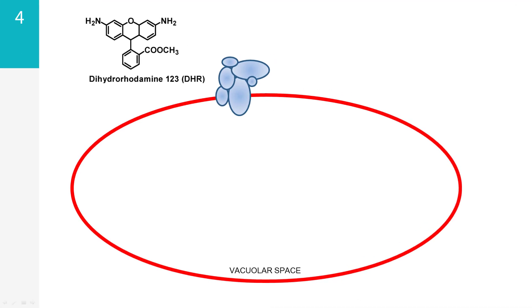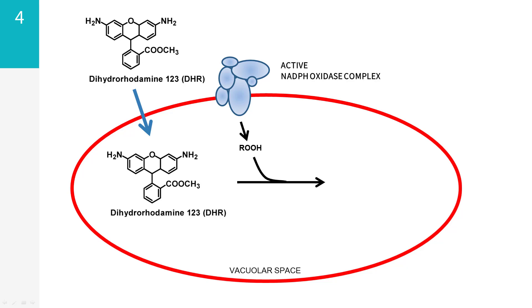Dihydrorhodamine is a chemical compound that can permeate most cellular compartments and membranes and spontaneously enters cells. Following contact with ROS, dihydrorhodamine, or DHR, is oxidized to rhodamine-123. Rhodamine is brightly fluorescent and its presence can be detected by flow cytometry.